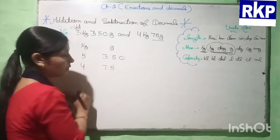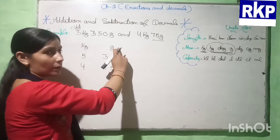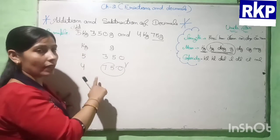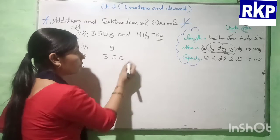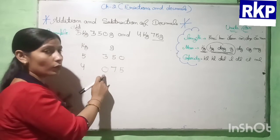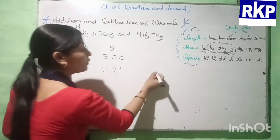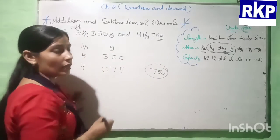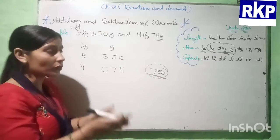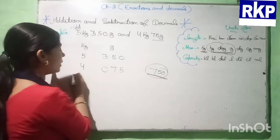If we write 75 and then put zero after it, it means 750 grams, not 75 grams, so that will be wrong. We will write 0 before 7, so it becomes 075, because 075 means 75 grams. But if we put 0 after 5, it means 750 grams. We have to write only 75 grams, so we put 0 before the 7.